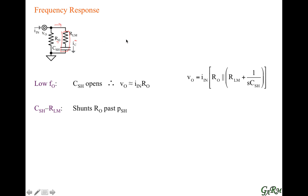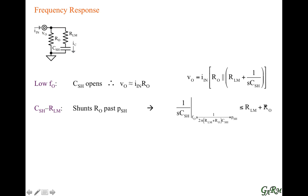This pole happens essentially when this RC shunts the output resistor — or in different words, when this capacitor shunts its equivalent parallel resistance, which is the series combination of these two resistors. The capacitor has one side connected to ground, so to find the equivalent parallel resistance, we start from the other terminal and go through the network until we find ground again. That path goes through R_LM in series with R_O. So the pole happens when the capacitor impedance shunts its equivalent parallel resistance, which is the series combination of those two resistors.